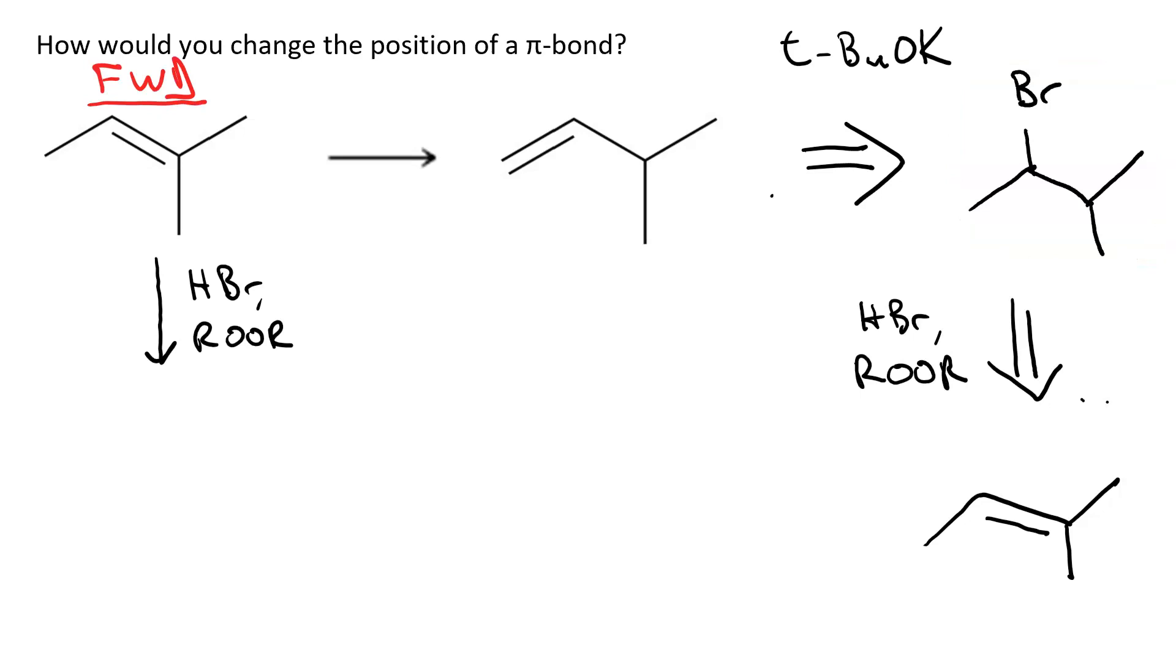So the 2-methyl-2-butene we'd react with hydrobromic acid and peroxide. So now going in the forward direction, our first step is the anti-Markovnikov hydrobromination where we use HBr and ROOR on the 2-methyl-2-butene, and we get the 2-bromo-3-methylbutane.